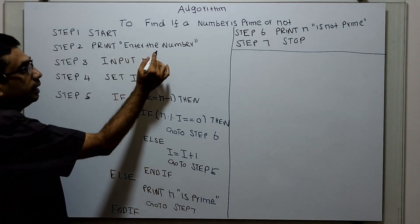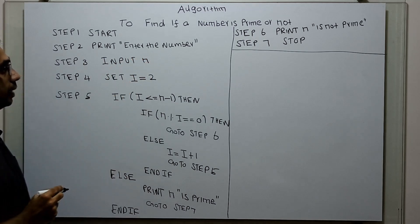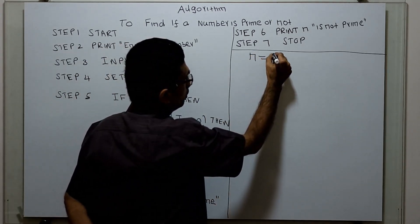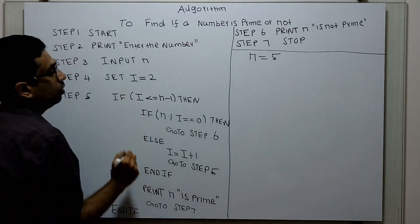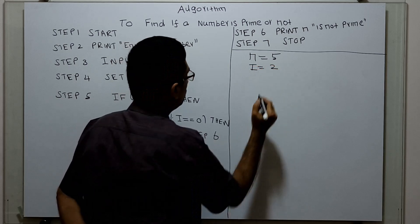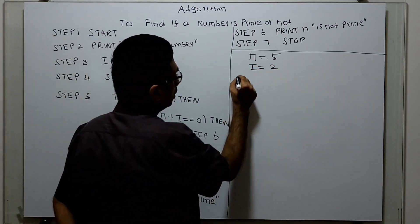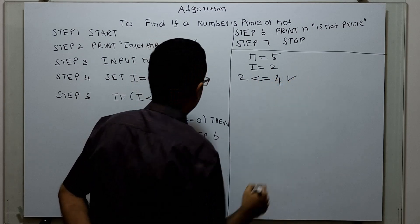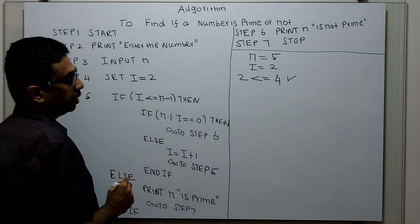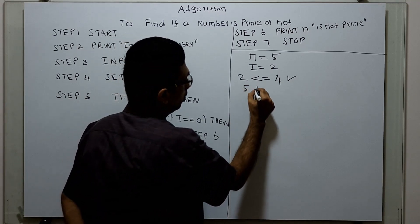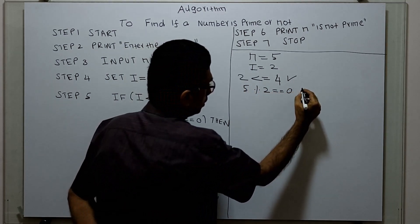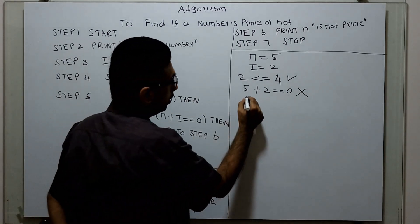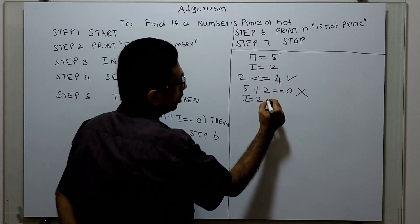Let's trace through with n=5. Logical start, print 'enter the number', input n — my n value is 5. Set i equal to 2. Check: is i less than or equal to n minus 1? That is, 2 less than or equal to 4 — the condition is true. Check n modulo i: 5 mod 2 equals 0? This is not true. So go to the else part and increment i by 1. i becomes 3.